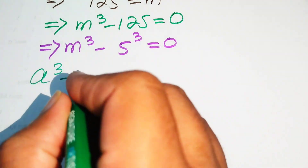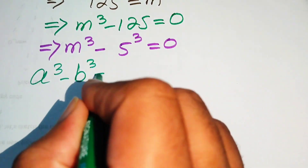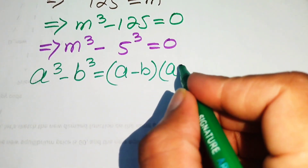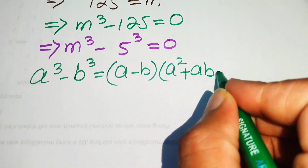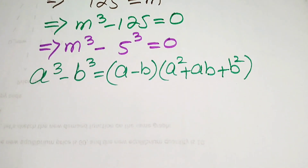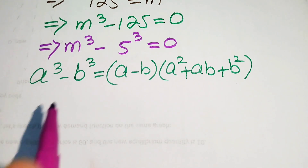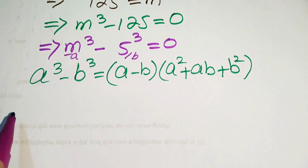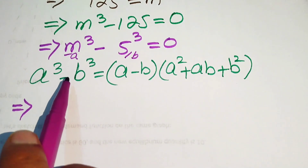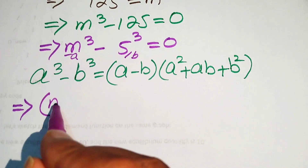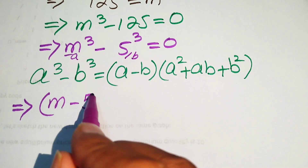We use a cubic factoring formula: a cubed minus b cubed equals (a minus b)(a squared plus ab plus b squared). In our equation, the value of a is m and the value of b is 5, so we apply this formula.